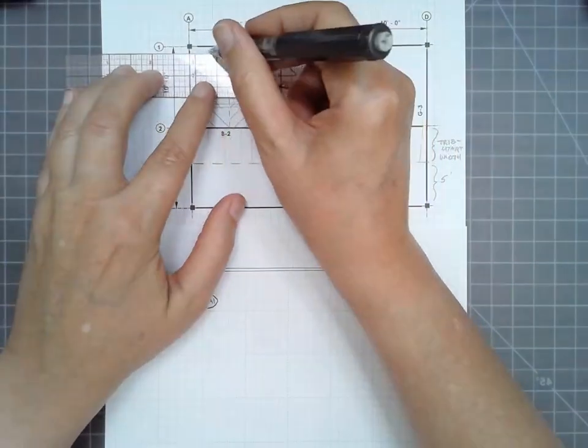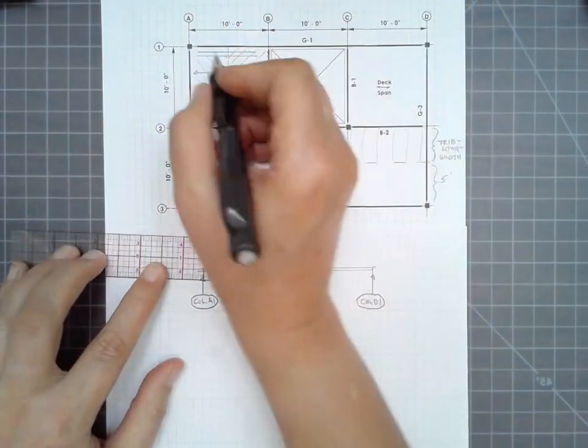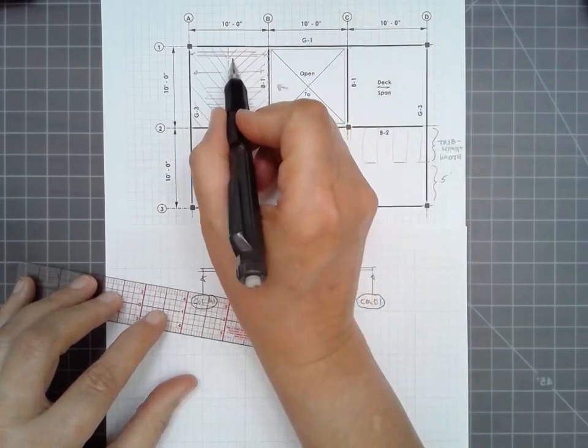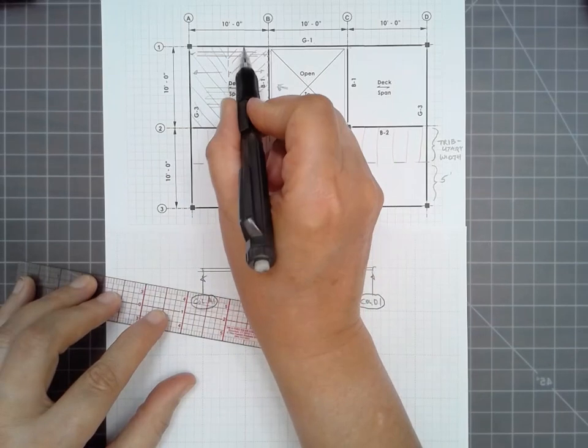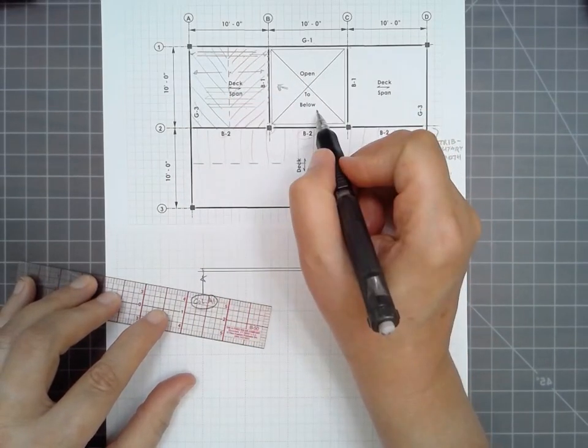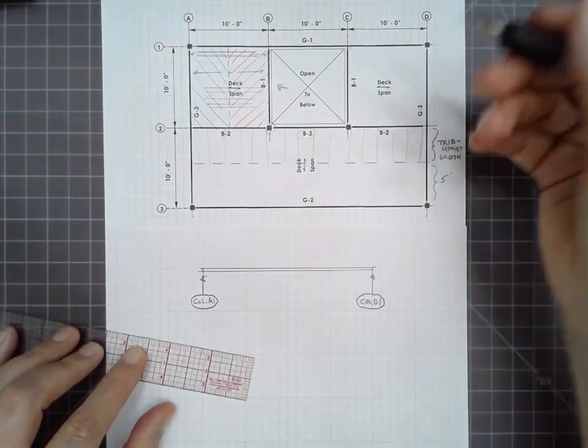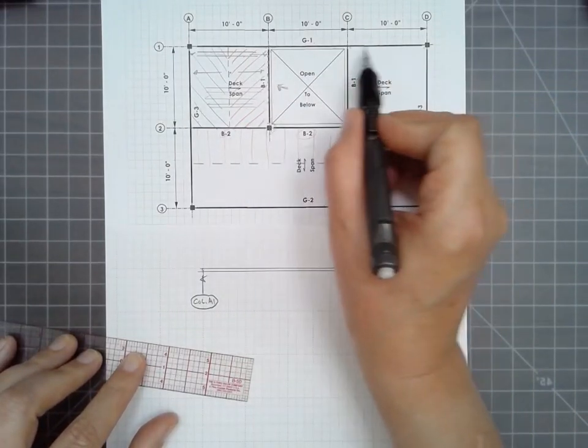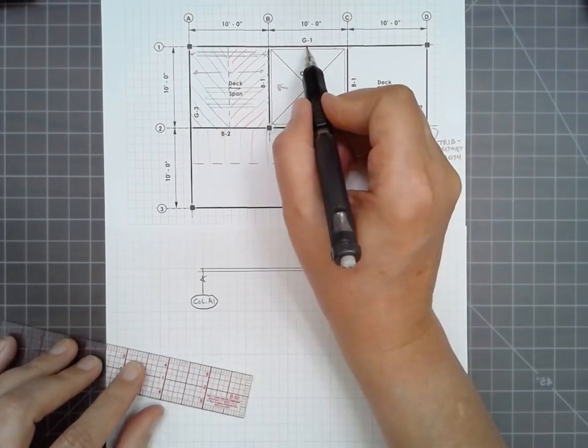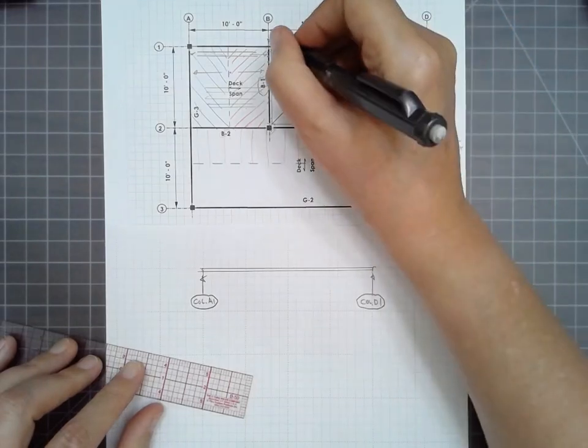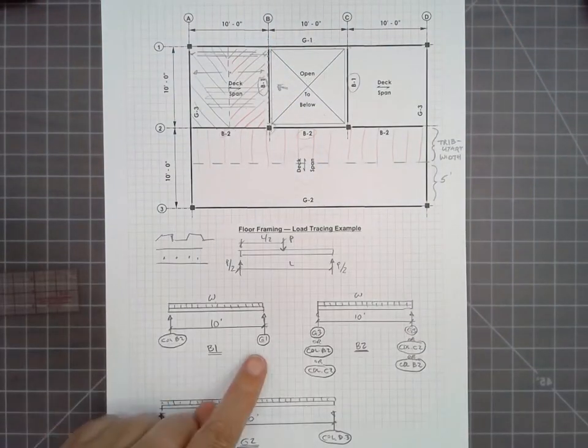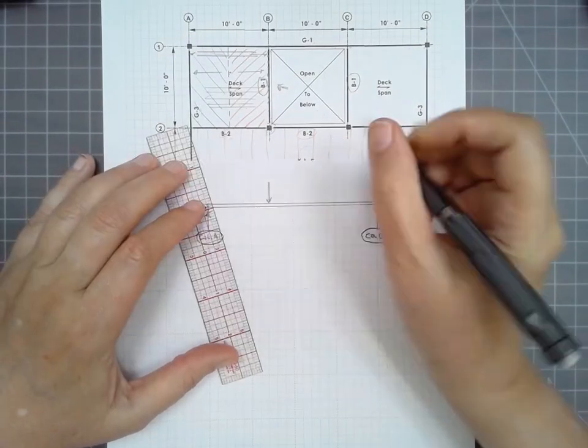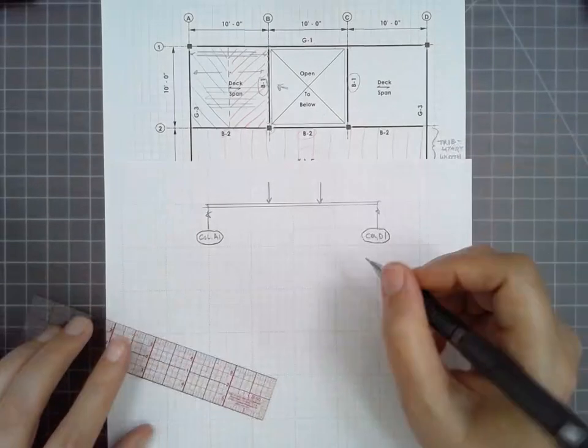Because the deck is spanning parallel to this beam, that means it's transferring its loads only perpendicular to members B1 and G3. So actually, G1 does not support any deck directly. This is an opening. So this may be a stairwell or an atrium, some sort of penetration in the building. We use this for mechanical shafts as well. So this also has no load. That means that there are no uniform loads on member G1. However, there are two concentrated loads that come from this B1 and this B1.